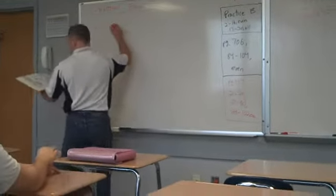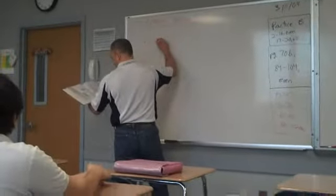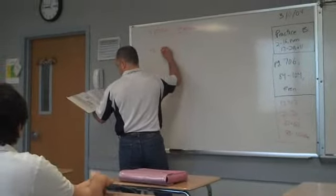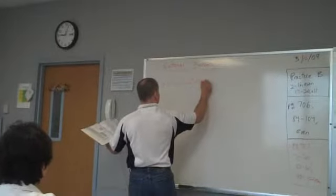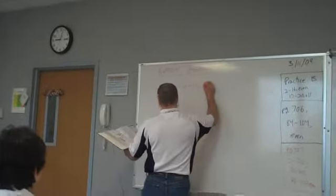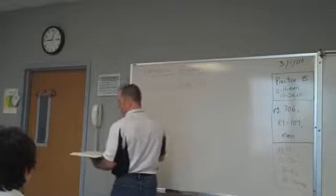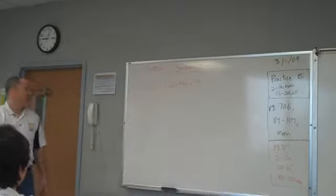Okay, f of x equals x cubed minus x squared plus 49x minus 49.